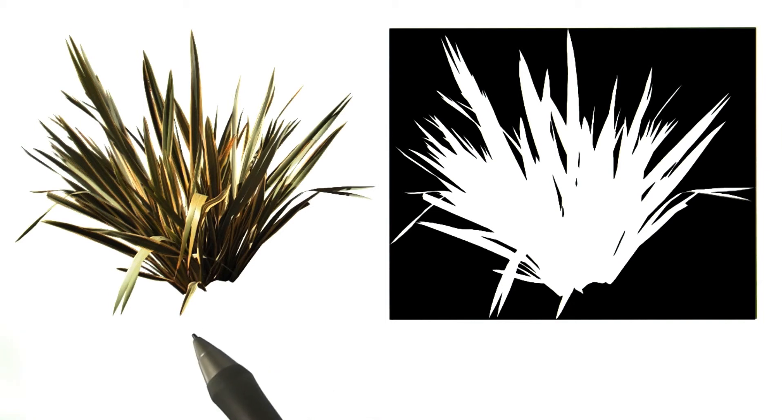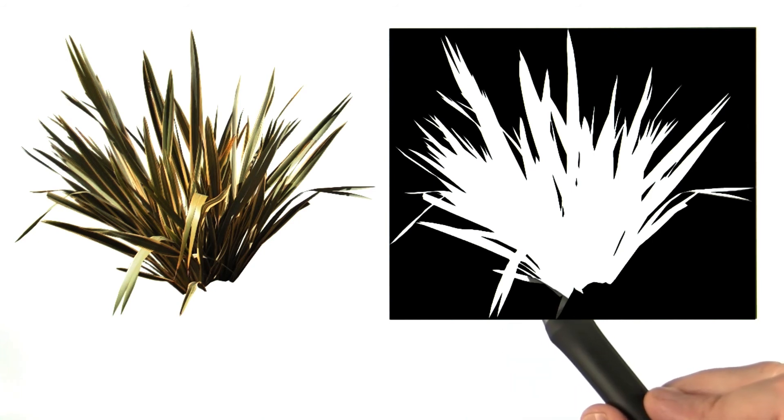Here's an example of an object with its alpha texture. White areas are where the plant is, black is transparent, and gray alphas mean the pixels are partially covered by some leaf.